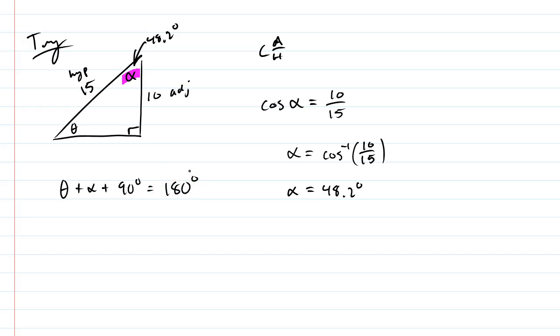So another question teachers will ask is once you've found the angle, what's the other angle? So this is going to be theta plus 48.2 plus 90 should equal 180. So a lot of students just say 180 minus 90 minus 48.2, and the other angle happens to be 41.8 degrees.